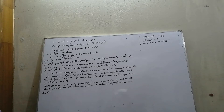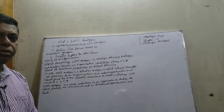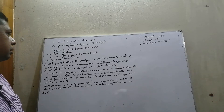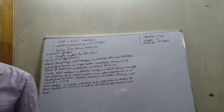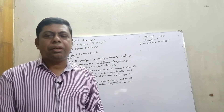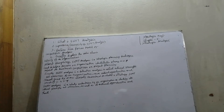According to Albert Humphrey, SWOT analysis is a strategic planning technique used to help a person or organization identify the strengths, weaknesses, opportunities, and threats related to business competition or project planning. According to Thomas J. Chermack, SWOT stands for Strength, Weakness, Opportunity, and Threat, and is a method of analysis of the environment and the company's standing in it.